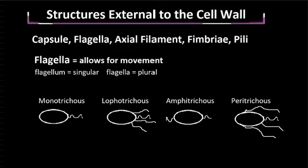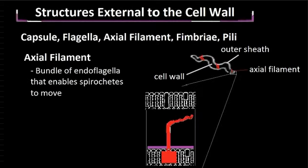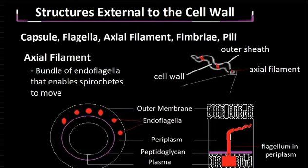Let's move on to talking about the axial filament. The axial filament is a bundle of endoflagella that allows the spirochete to move. As you can see in this diagram, the axial filament wraps around the cell body of the spirochete. The axial filament is found in the periplasm of the spirochete, and when it rotates, this allows the spirochete to move.